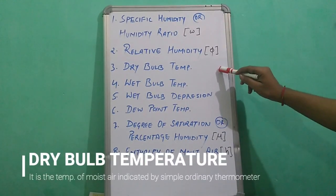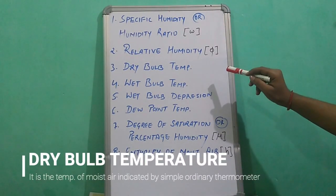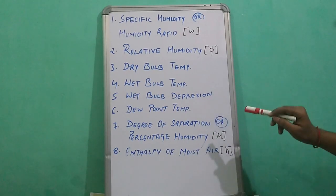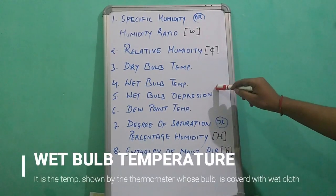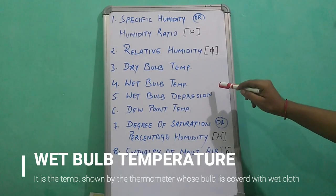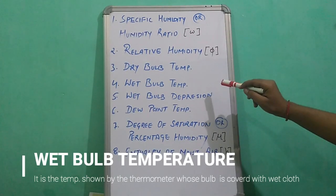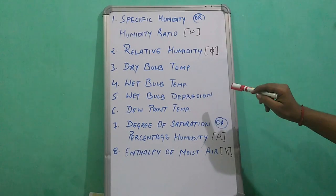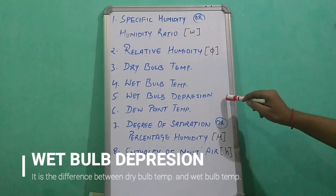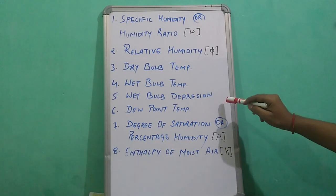Dry bulb temperature is the temperature of the moist air indicated by a simple ordinary thermometer. Wet bulb temperature is the temperature shown by the thermometer whose bulb is covered with a wet cloth. Wet bulb depression is the difference between dry bulb temperature and wet bulb temperature.